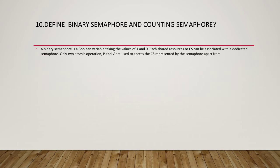The P(X) operation causes the value of the semaphore to be decreased by 1, if X is not already 0. The V(X) operation causes the value of the semaphore to be increased by 1, if X is not already 1.